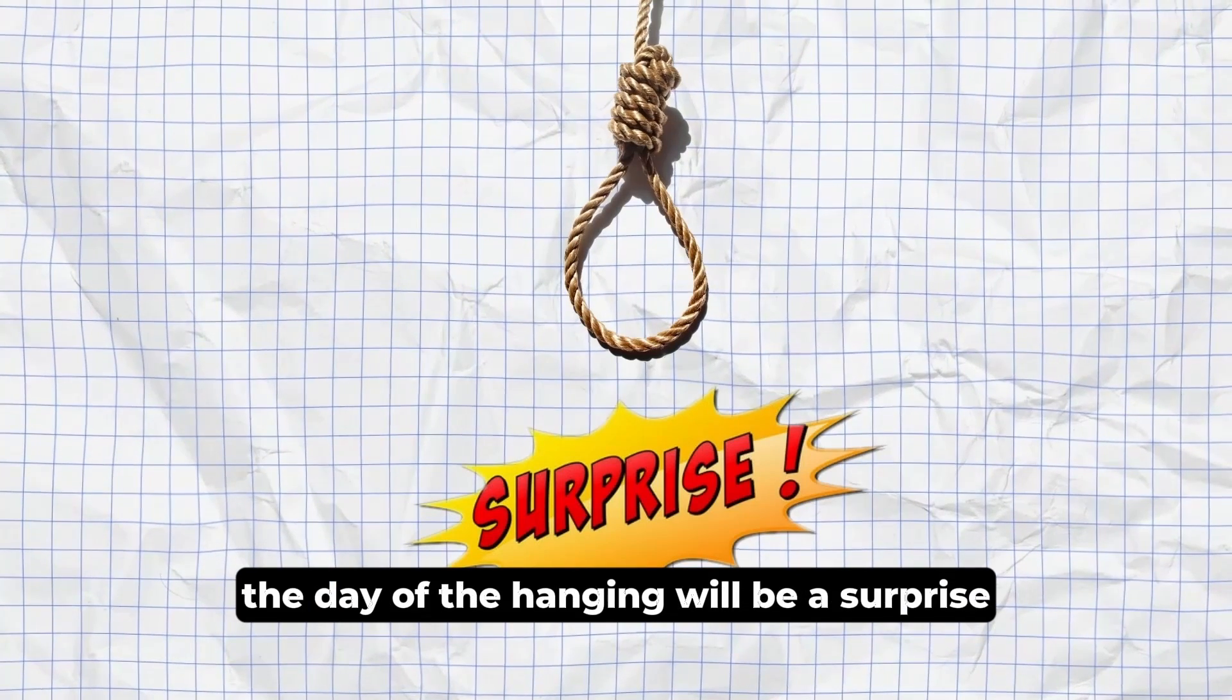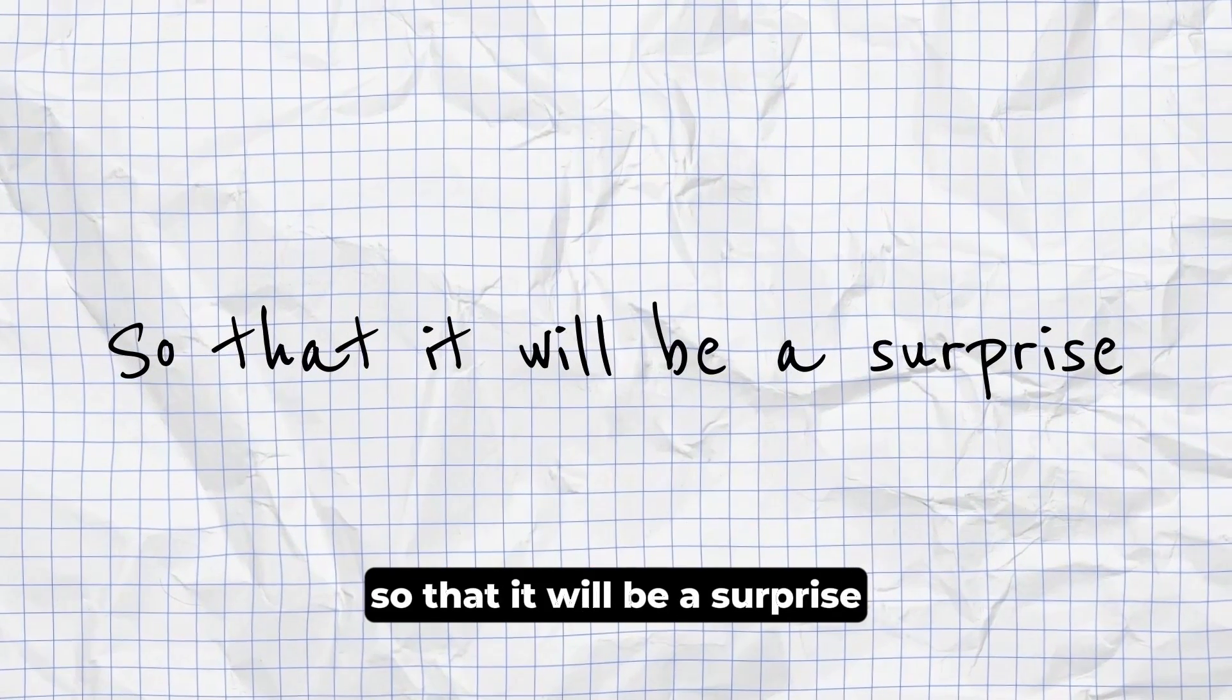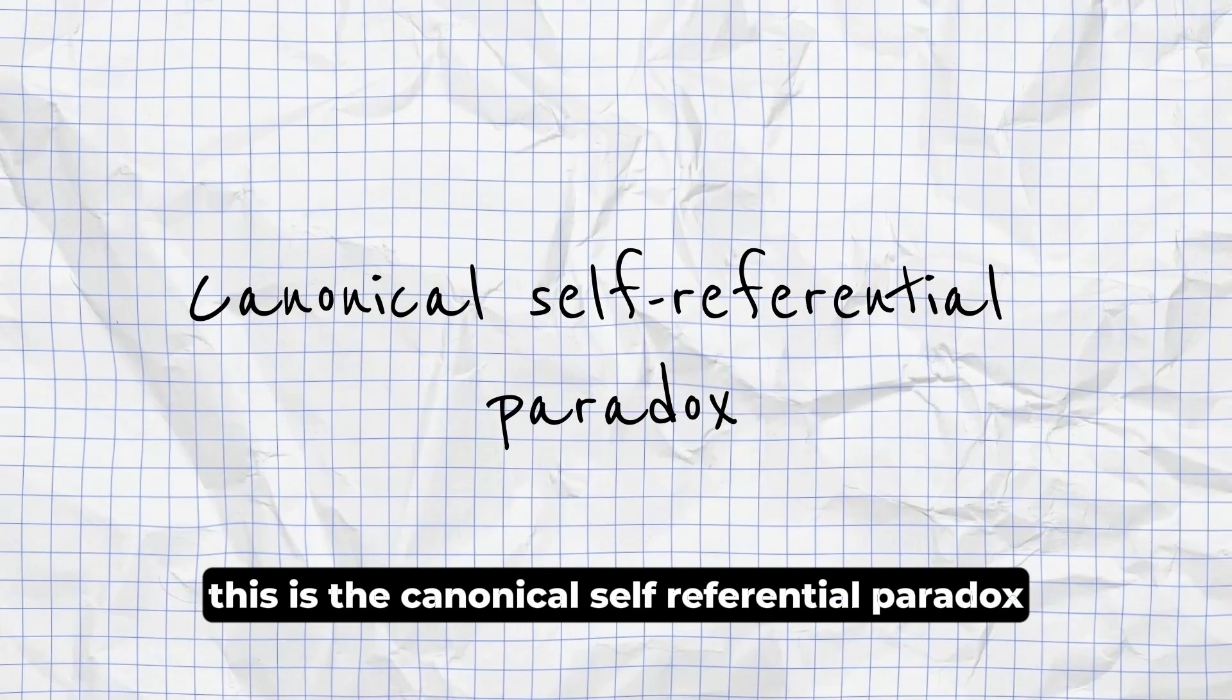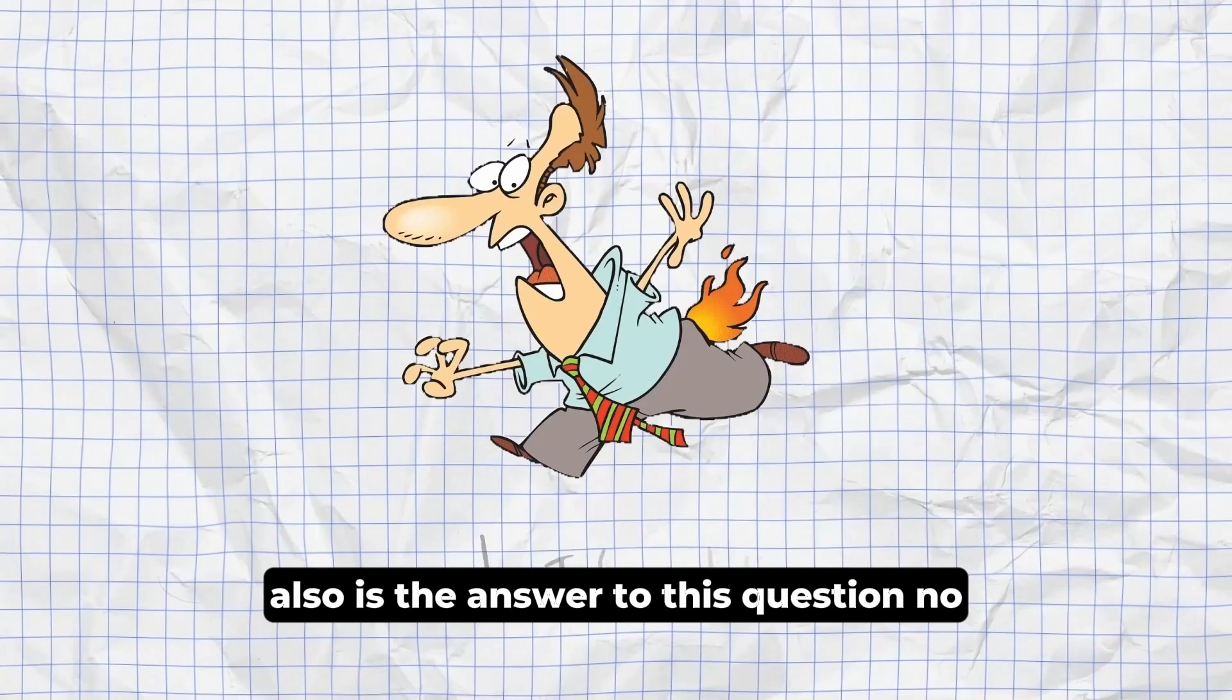Unexpected Hanging Paradox. The day of the hanging will be a surprise, so it cannot happen at all, so that it will be a surprise. The Liar Paradox. This sentence is false. This is the canonical self-referential paradox. Also, is the answer to this question no and I'm lying?